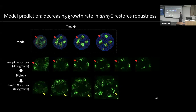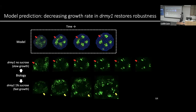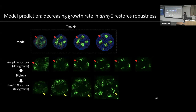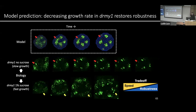I validated this model prediction using real dreamy1 buds via live imaging through time. Under normal growth conditions with 1% sucrose, the buds grow fast, and the dreamy1 mutant bud shows noise stabilization over time forming additional auxin maxima. In contrast, when the dreamy1 mutant bud is grown under no sucrose to decrease growth rate, although there is initial noise, over time the noise gradually dissipates and the four auxin maxima form. This matches the model and indicates that during development there is indeed a trade-off between morphogenesis speed and robustness: reducing speed promotes robustness of patterning.